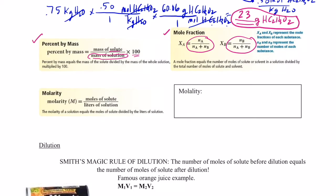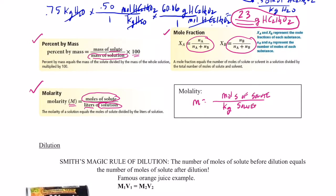Molarity, symbolized by capital M, is moles of solute divided by liters of the entire solution — the most common concentration unit. Then molality, symbolized by the small letter m, is moles of solute in the numerator divided by kilograms of just the solvent. Those are the four units of concentration commonly used in chemistry.